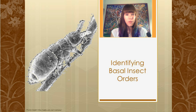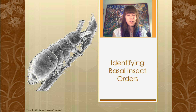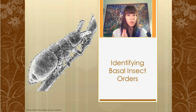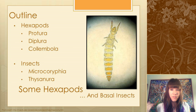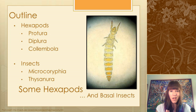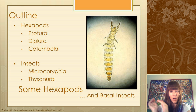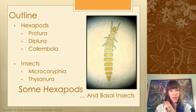We're going to start working through the insect orders today, and this is going to be part one of a three-part grouping. Part one is just going to cover hexapods and some of the basal insects. The outline covers hexapods, Protura, Diplura, Collembola, and then two insect groups at the very base of the tree: Microcoryphia and Thysanura.